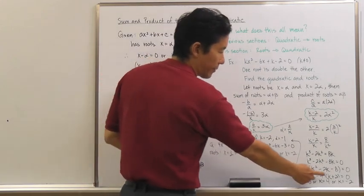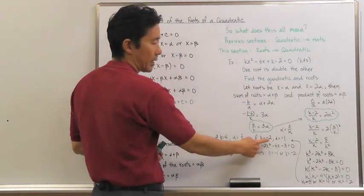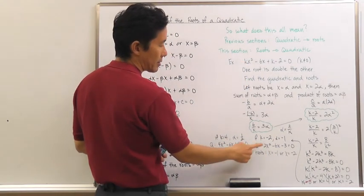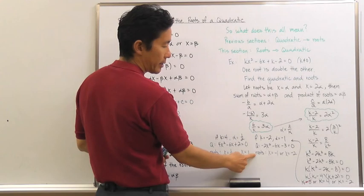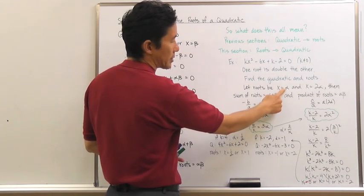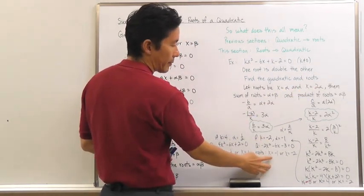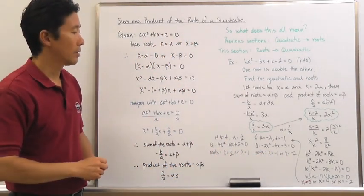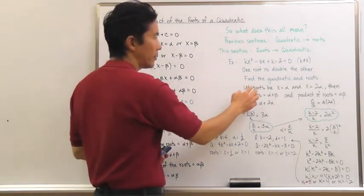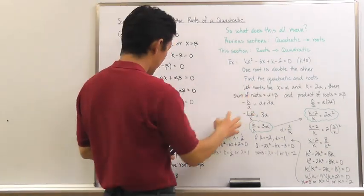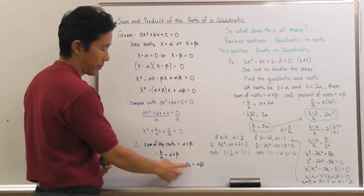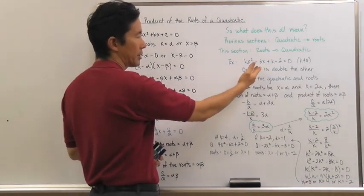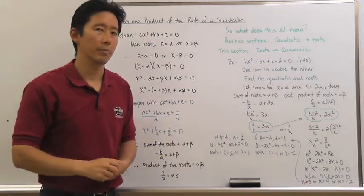For k = −2, alpha is going to be equal to −1. I can substitute the value of k to come up with the corresponding quadratic, and then substituting the value of alpha gives x = −1 or x = −2. Notice that by knowing the sum and product of the roots, given the roots, I can then find information about what the original quadratic equation was.